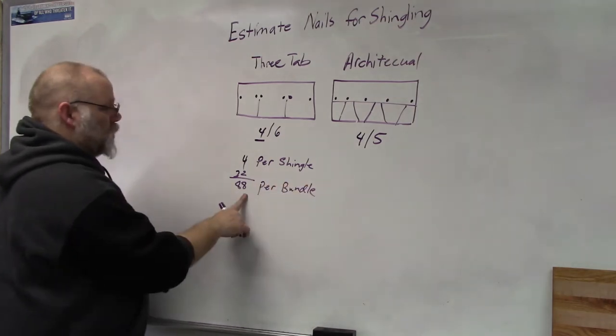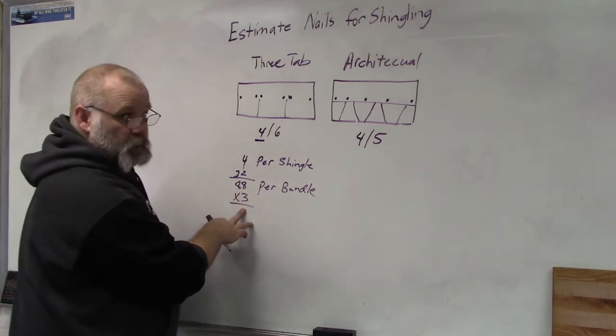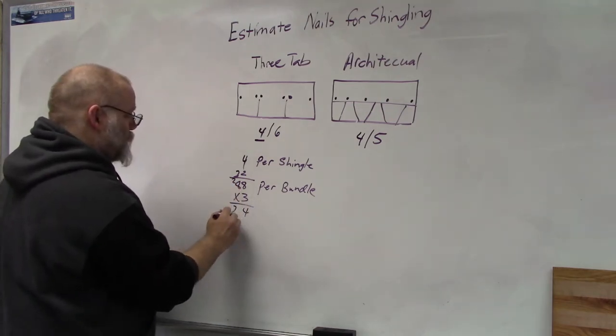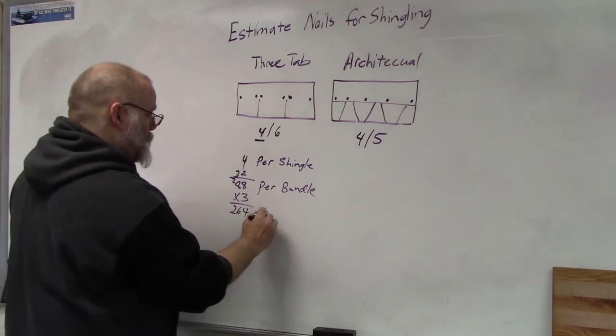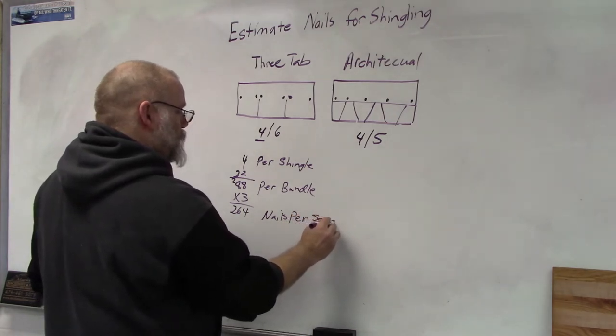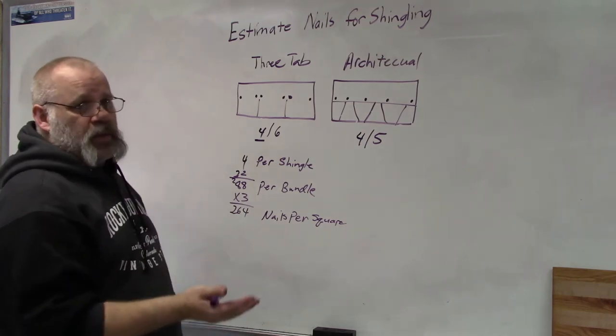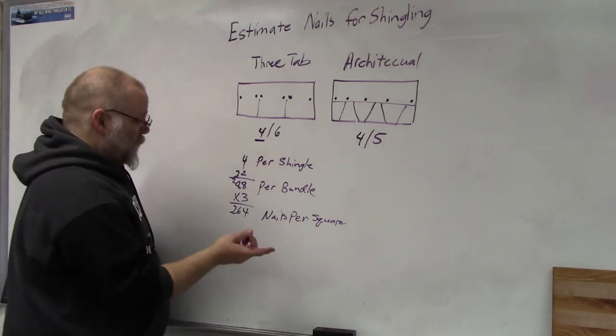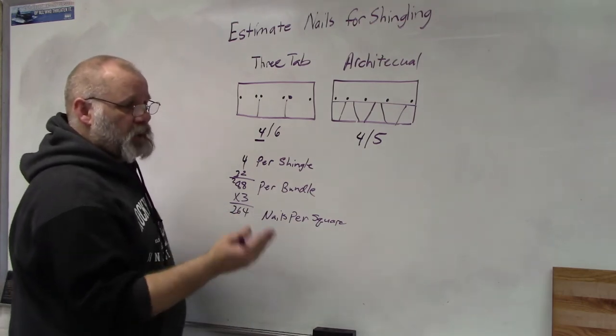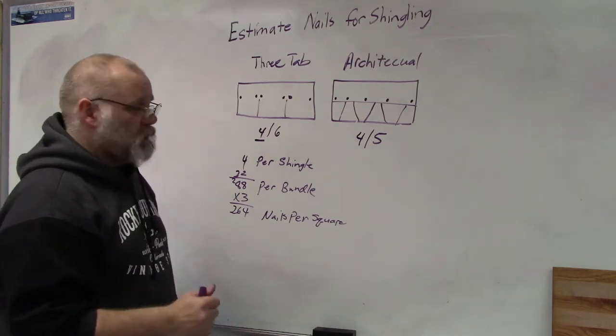Okay, so per bundle, and then multiply times three because there's usually three bundles per square of shingles, so that's 264 nails per square. So if you're going to do a roof and you're putting on 25 squares, you take the number of squares times this number and that would tell you how many nails you're going to approximately need to nail your shingles on.